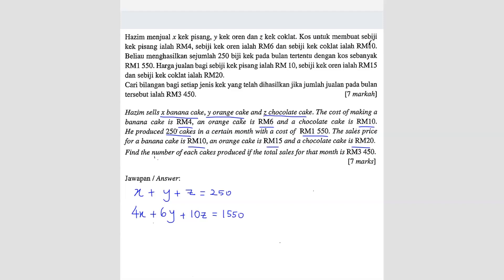The third one: the sales price is 10, 15, 20. The total sales is 3450, so we can use 10x plus 15y plus 20z equals 3450.